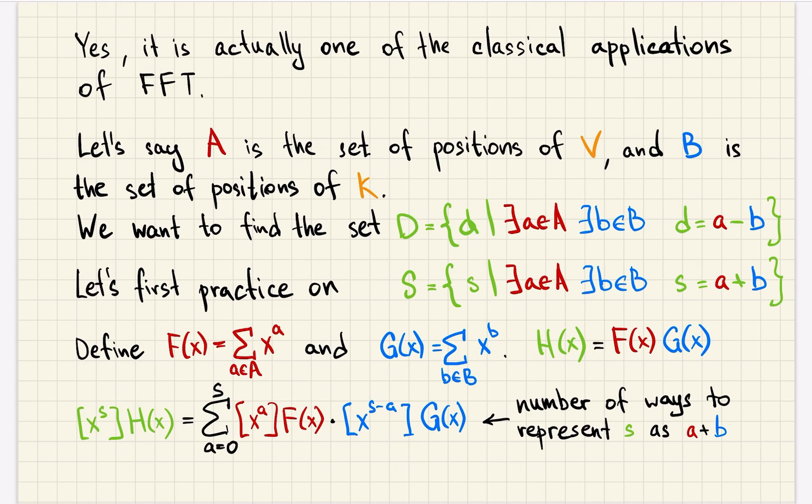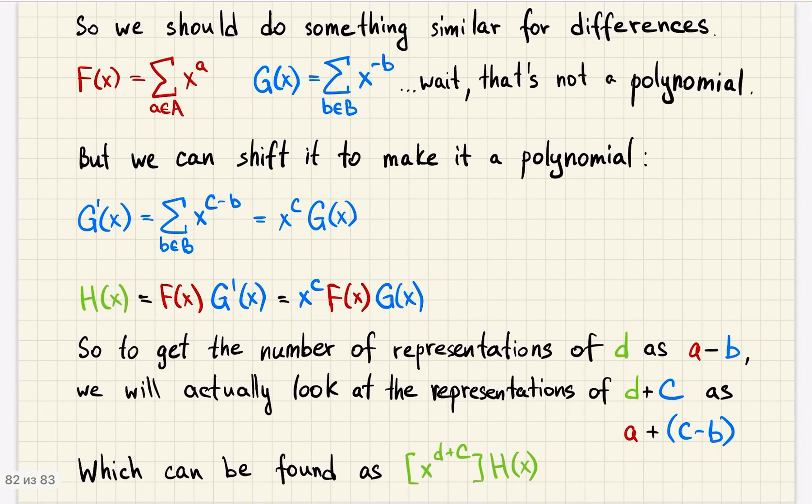So the number we calculate is number of ways to represent s as a sum of a and b. Since our sets consist of non-negative integers that are bounded by n, calculating this multiplication with FFT will take us n log n time.